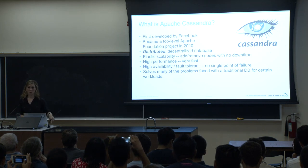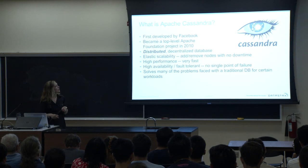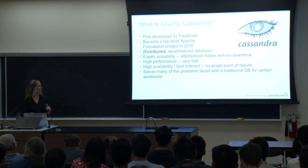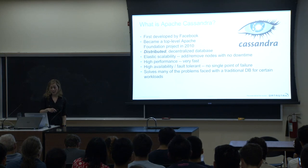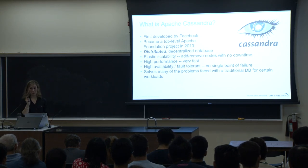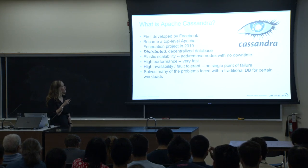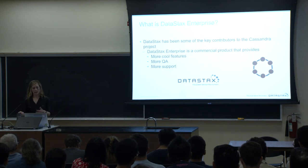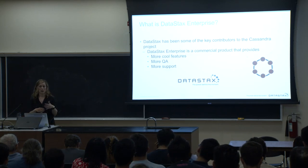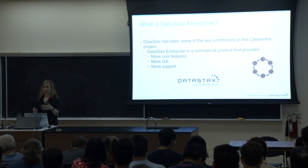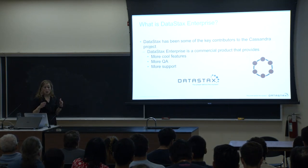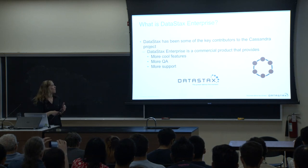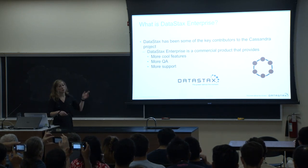Cassandra is elastically scalable. You can add and remove nodes with no downtime. It has high performance — it is very fast. It's highly available and fault tolerant. There is no single point of failure. It solves many of the problems faced with traditional databases for certain workloads. DataStax has many of the key contributors to the Apache Cassandra project. We took the core of the open source product, put it into a commercial product that provides many more cool features, more QA testing, and more support.